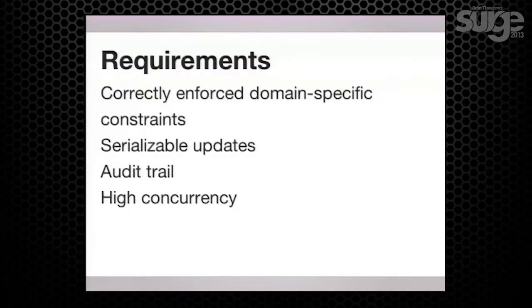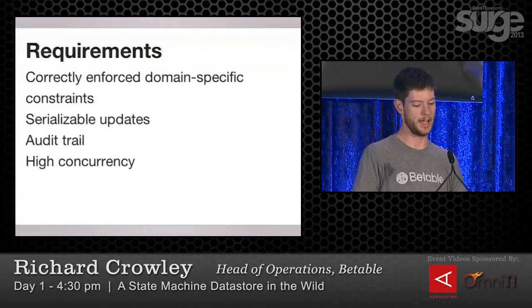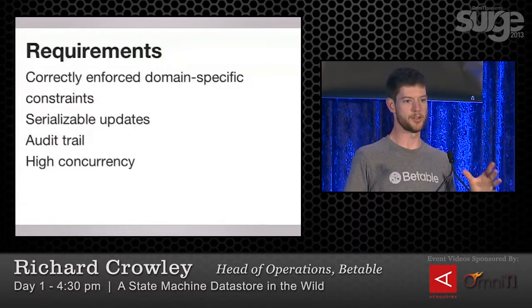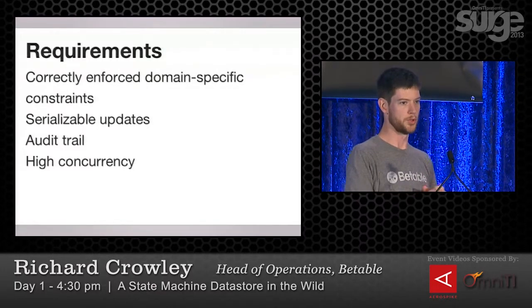So we tried to use Cassandra first — we wanted to be good to the thing that had been good to us. With these requirements of needing to enforce, at the system level, some very high-level domain-specific constraints — not something like a foreign key relationship but meatier things dependent on the rules of a game — we needed serializable updates and we needed an audit trail. We're already so far off the rails of what a typical gambling operator does that we need the utmost certainty and proof that everything is totally legit. And given the idea of all of us playing roulette at the same time, we have to think about high-concurrency updates.